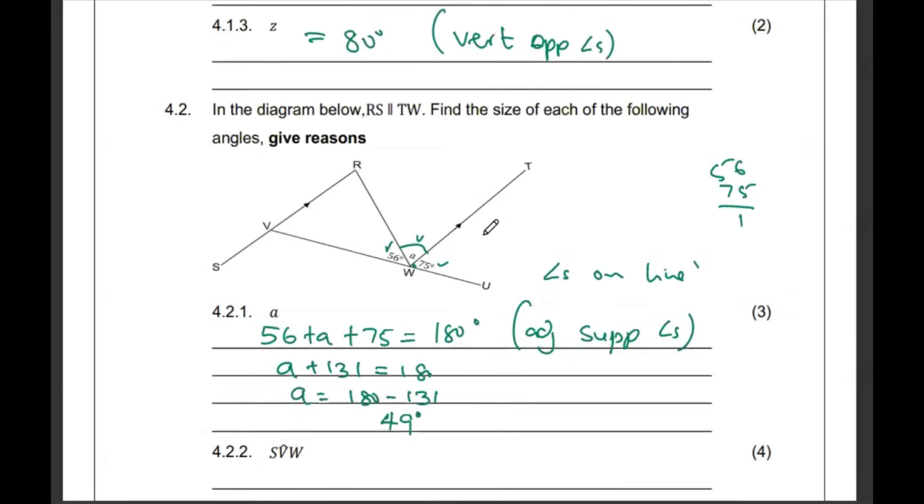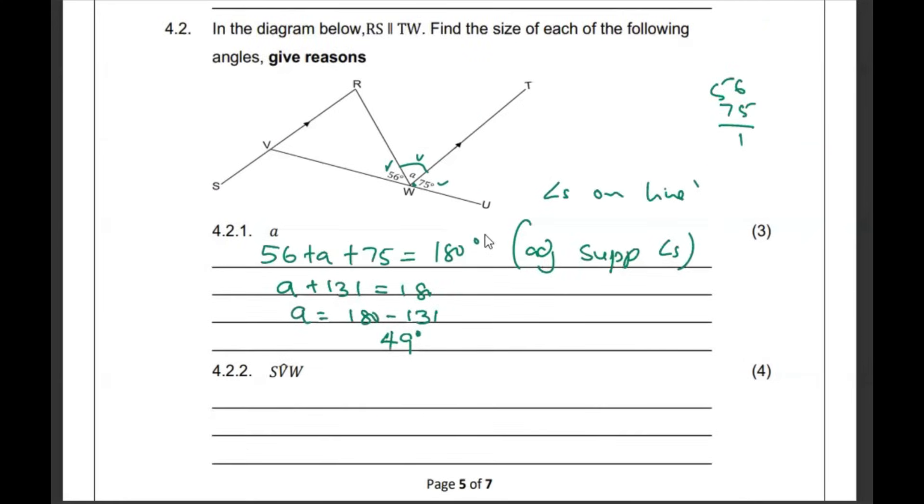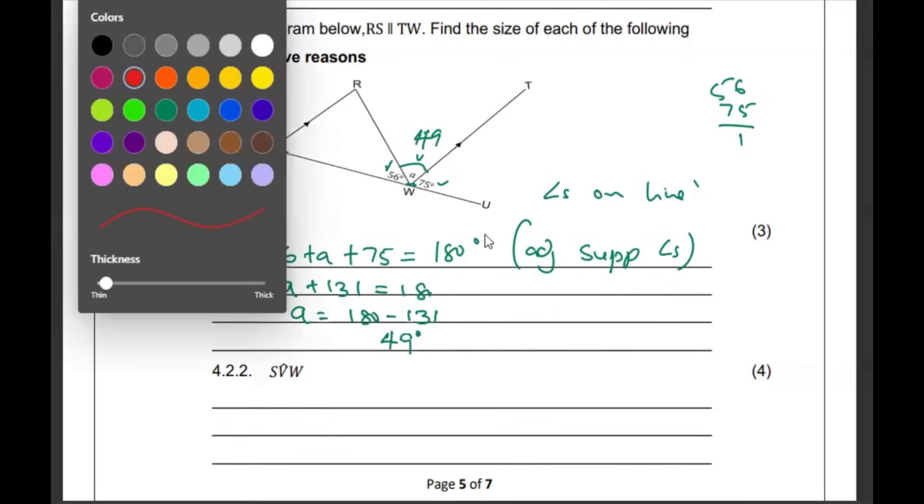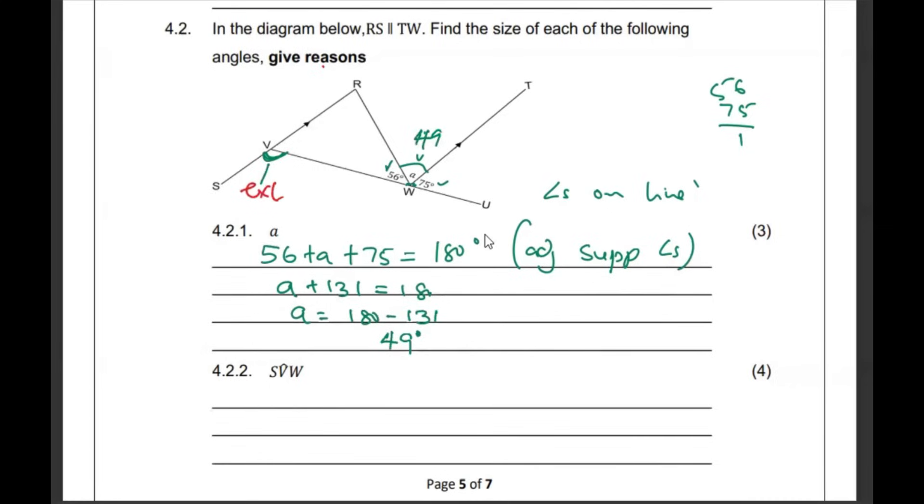Then SVW. In other words, we must find the size of this angle. If this is 49, we know that this SVW is an exterior angle. If we are focusing on this triangle here. SVW becomes exterior. And the property of exterior angles is that if we can get the two opposite interior, then we shall be able to get that exterior.